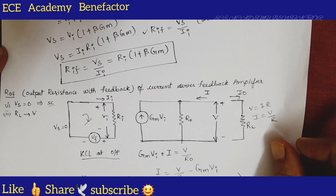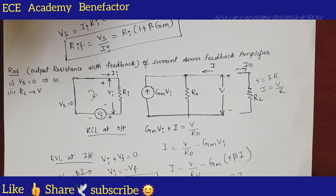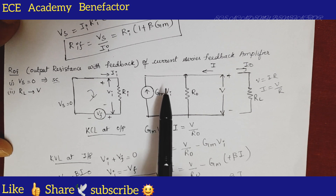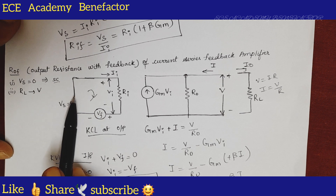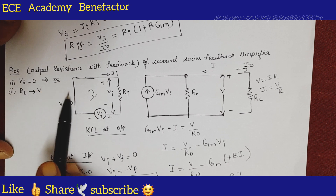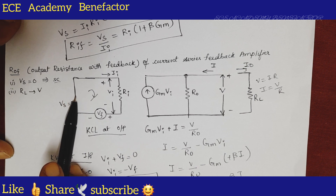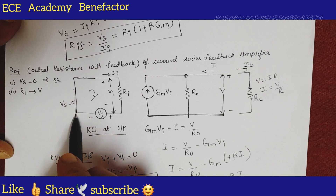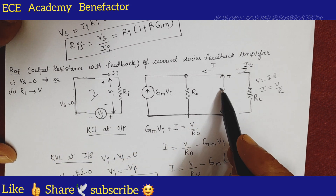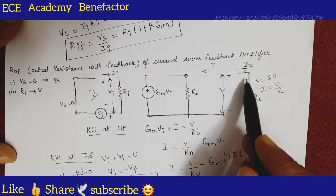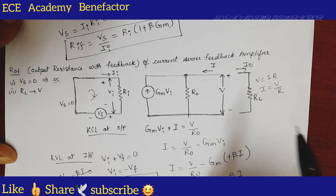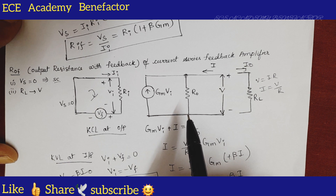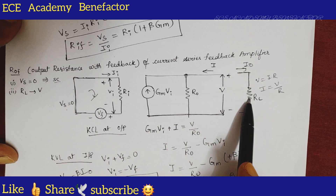Now let us start the derivation of ROF. For deriving ROF we need to do two arrangements. First, we need to make the input zero — since there was a voltage source, making input zero means short-circuiting it. Second, the load resistor RL at the output side is removed and replaced with a test voltage source V which delivers a current i to the circuit.